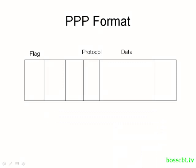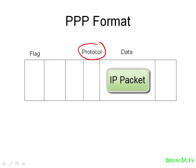In the protocol field, it identifies which protocol is encapsulated in the data field. For instance, if we have an IP packet in the data field, the protocol field will tell the router which Layer 3 protocol is inside. The original HDLC did not have the ability to do this. Cisco then introduced the type field in their proprietary version of HDLC, which added this functionality, and then PPP was created and also included it.